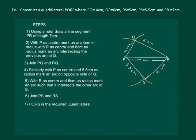We will have PS equal to 5.5 cm and RS equal to 5 cm. And hence PQRS is the required quadrilateral.